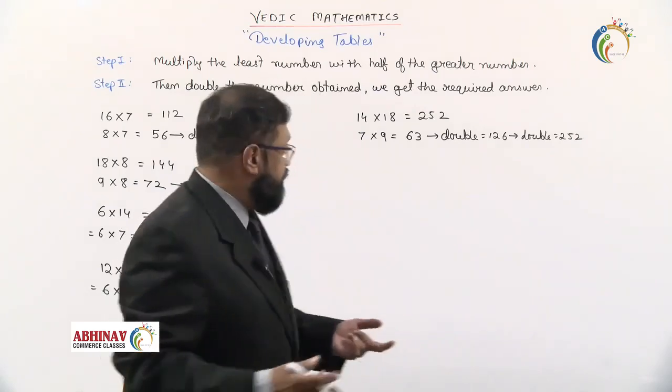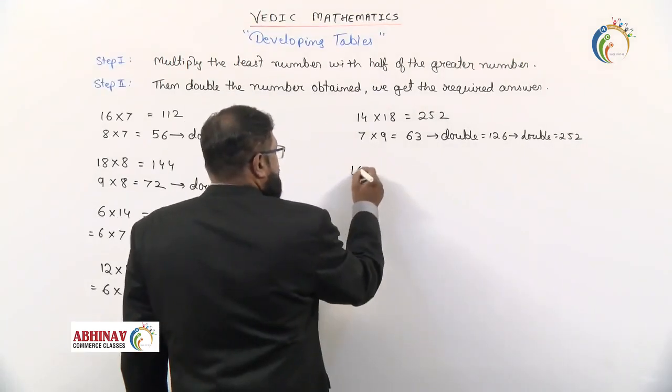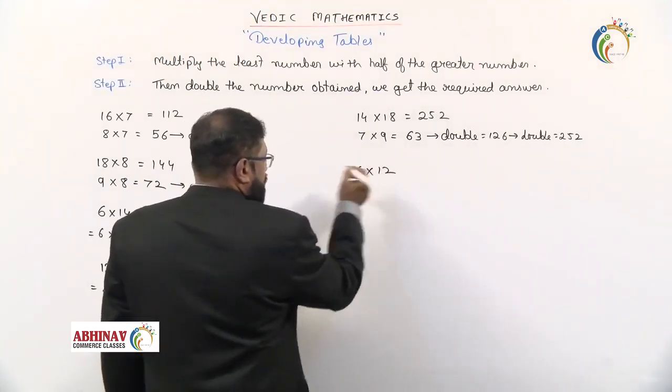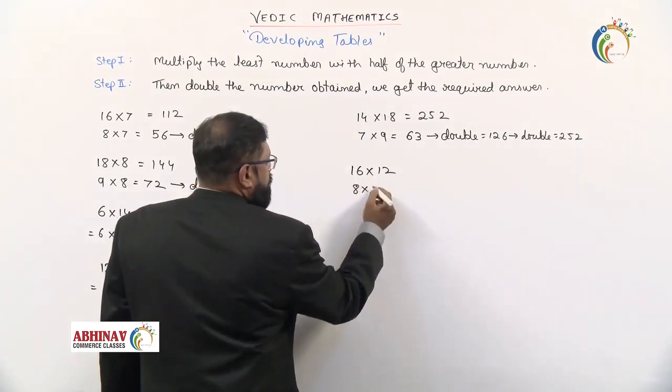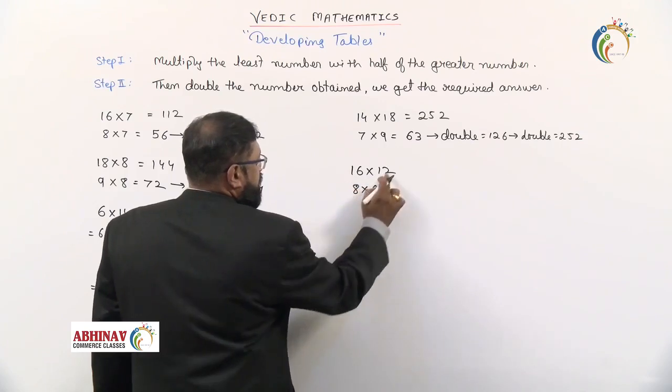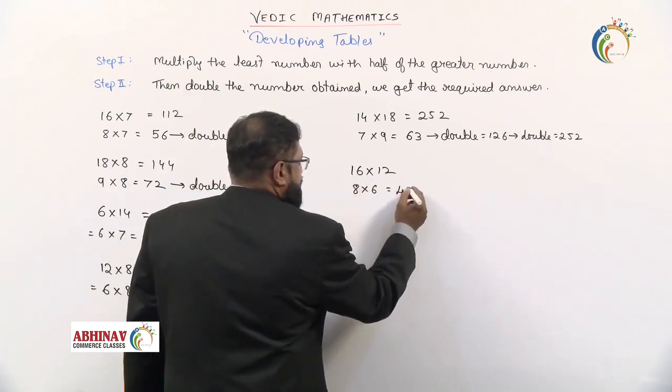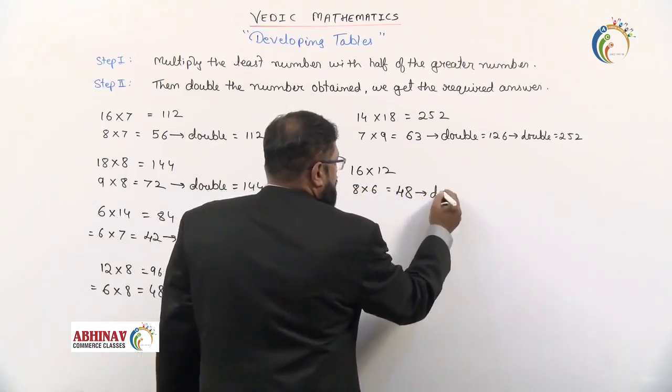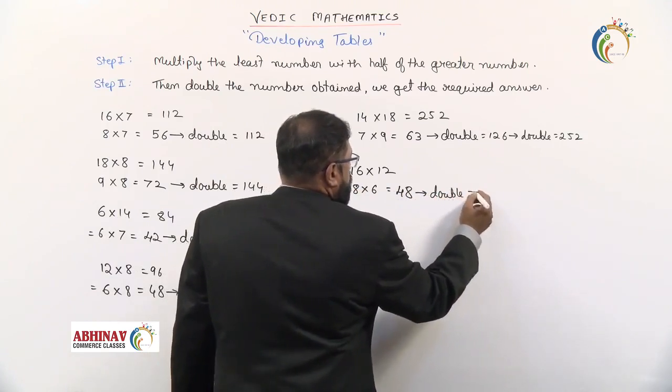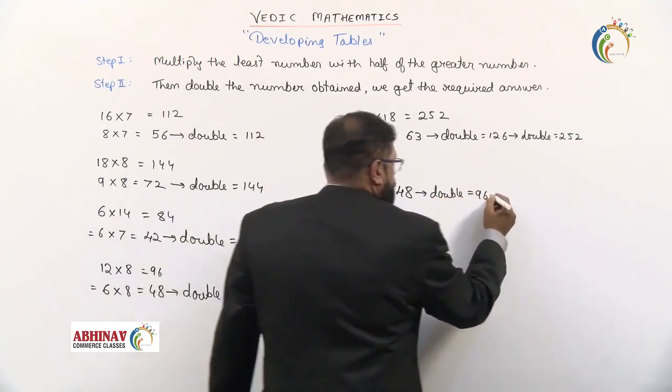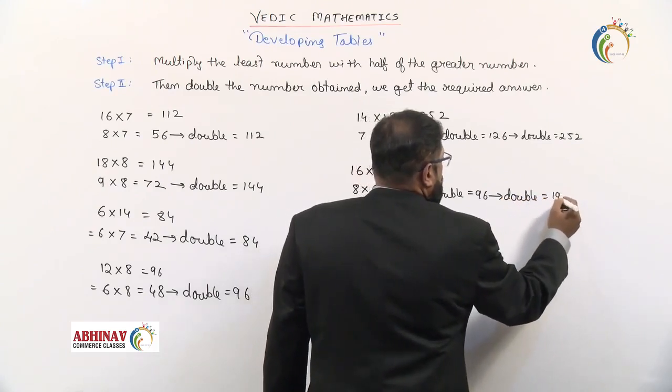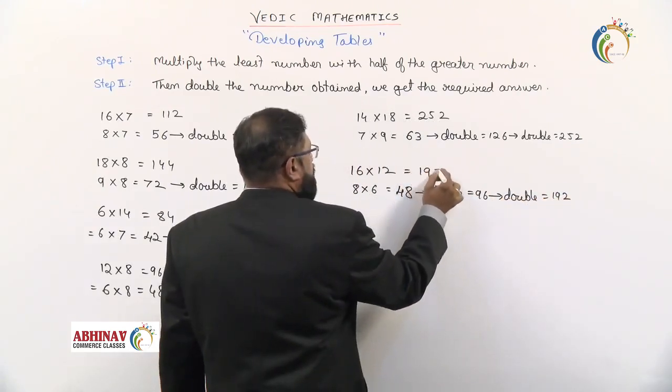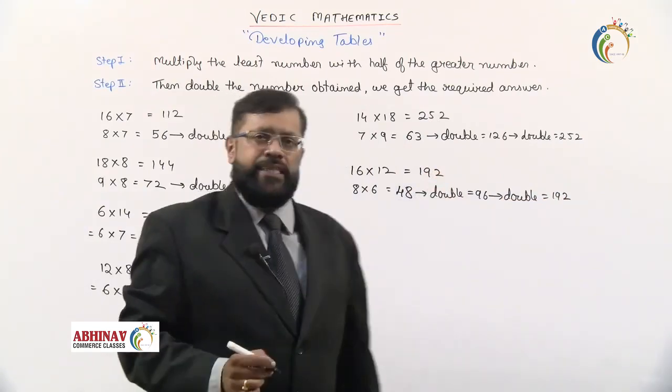Next, take it as 16 multiplied by 12. First we'll halve it. When you halve the numbers it's going to be 8 into 6, half of 16, half of 12. 8 sixes are 48. We double this, what you get is 96. We double it. When we double 96 what you get is 192. So 16 when you multiply by 12, what answer we get is 192.